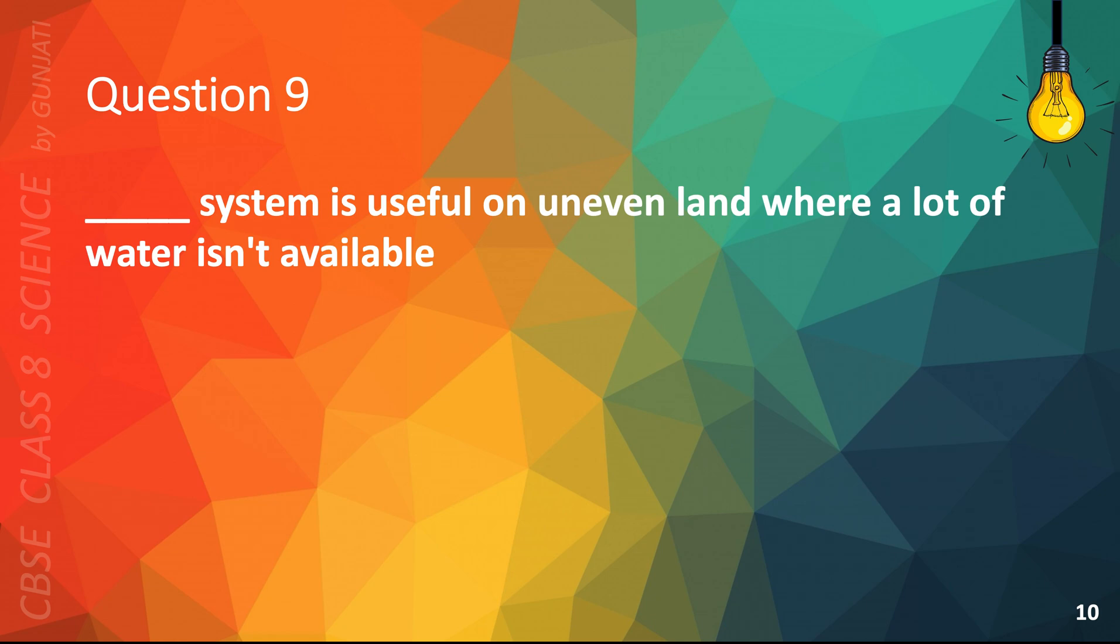Question 9. Blank system is useful on uneven land where a lot of water isn't available. A. Sprinkler, B. Drip, C. Chain, or D. Screw. The correct answer is A. Sprinkler.